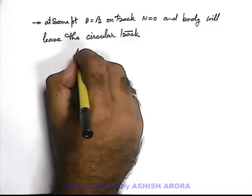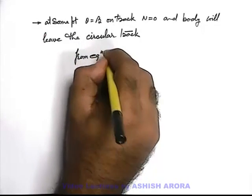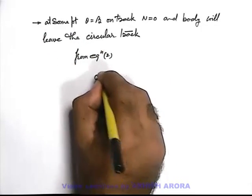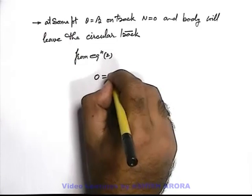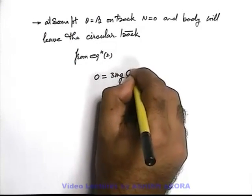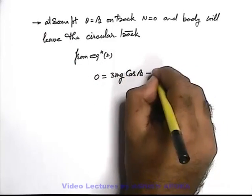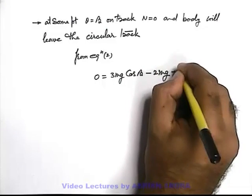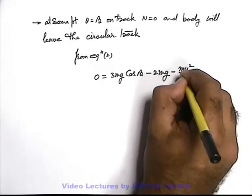Then from equation 2 we can directly write: 0 equals 3mg cos beta minus 2mg minus mu²/R.